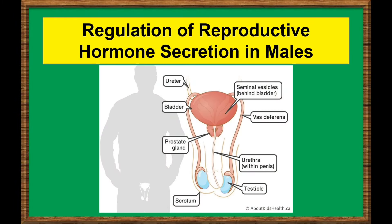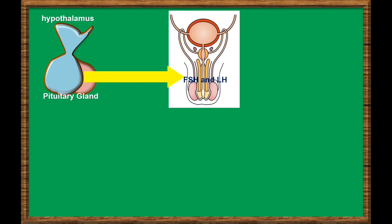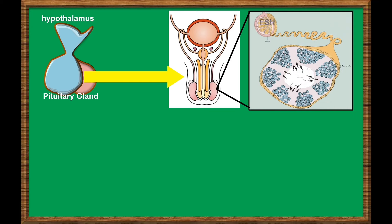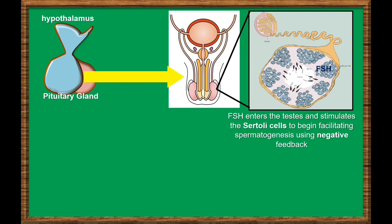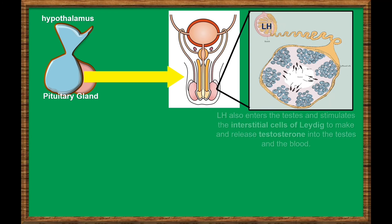Regulation of Reproductive Hormone Secretion in Males. At the start of puberty, the hypothalamus releases GnRH to stimulate the anterior pituitary gland to produce and release LH and FSH. The FSH and LH released by the pituitary gland travel into the male reproductive system. FSH enters the testes and stimulates the Sertoli cells to begin facilitating spermatogenesis using negative feedback. Luteinizing hormone also enters the testes and stimulates the interstitial cells of LH to make and release testosterone into the testes and the blood.